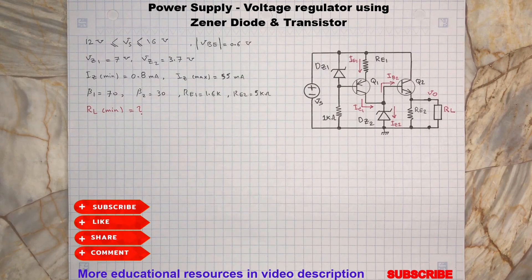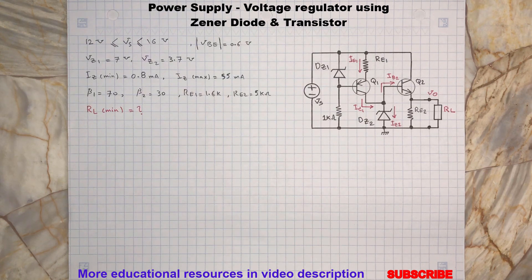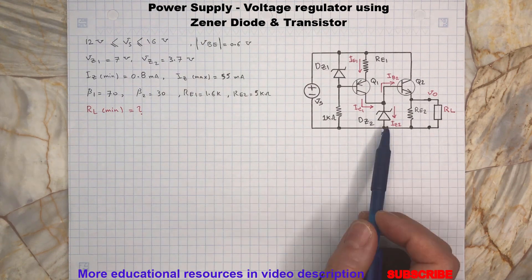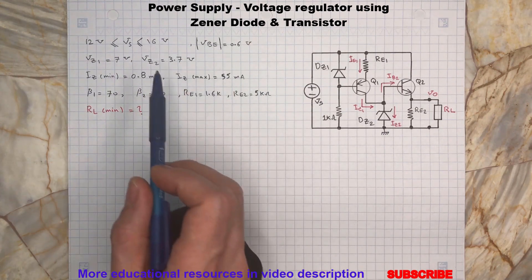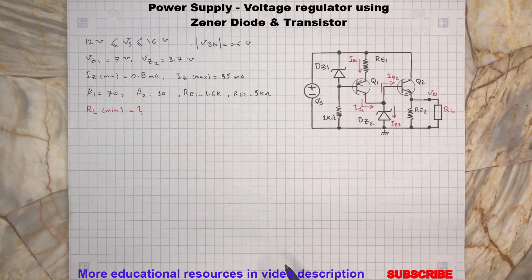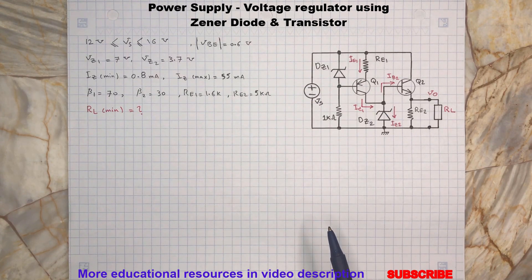In this video we are going to find the output voltage of the circuit and determine the minimum value of the load resistance RL where the output voltage will remain constant while the input voltage Vs varies between 12 and 16 volts. The Zener diode 2 is rated for 3.7 volts and is responsible for providing a regulated voltage to the base of the transistor Q2 and respectively 3.1 volt to the output terminal.